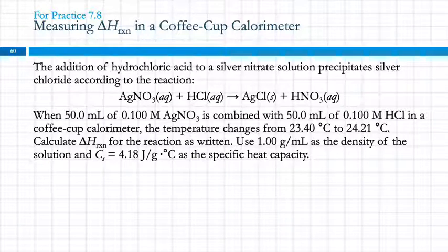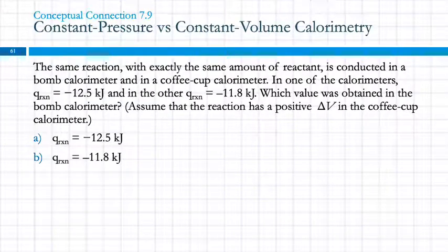Any other questions? My question is, will this chapter ever end? The same reaction with exactly the same amount of reactant is conducted in a bomb calorimeter and in a coffee cup calorimeter. In one of the calorimeters, Q reaction is minus 12.5 kilojoules, and in the other, Q reaction is minus 11.8 kilojoules. Which value was obtained in the bomb calorimeter? Assume that the reaction has a positive delta V in the coffee cup calorimeter.